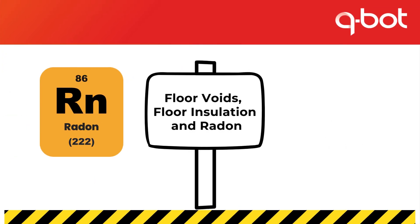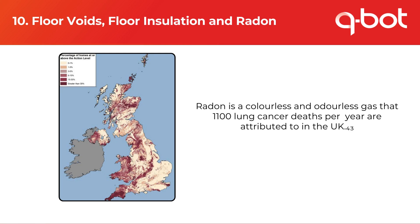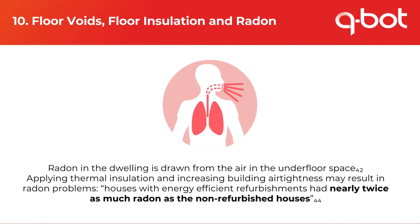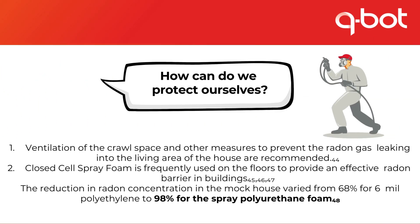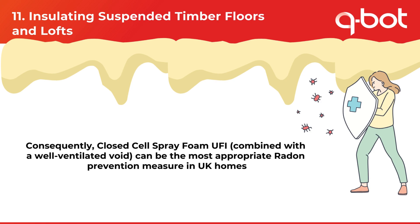Radon is a colourless and odourless gas to which 1,100 lung cancer deaths per year are attributed in the UK. Radon in the dwelling is drawn from the air in the underfloor space. Applying thermal insulation and increasing building airtightness may result in radon problems — houses with energy-efficient refurbishments had nearly twice as much radon as non-refurbished houses. By ventilating the crawl space and sealing it off from the living space, closed cell spray foam combined with a well-ventilated void can reduce radon concentration by up to 98% and is the most appropriate radon prevention measure in UK homes.